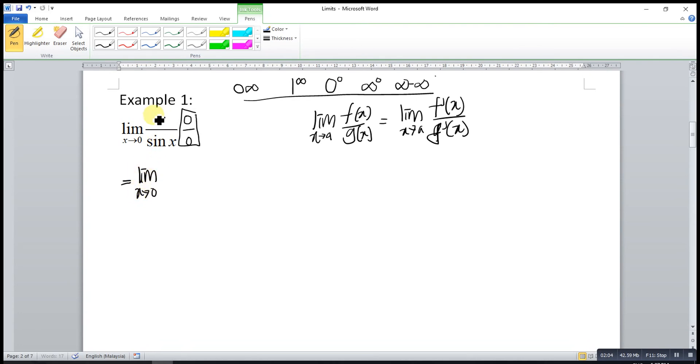x approaches 0. So when we differentiate x, it will give us 1. And then when we differentiate sin x, it will give us cos x.